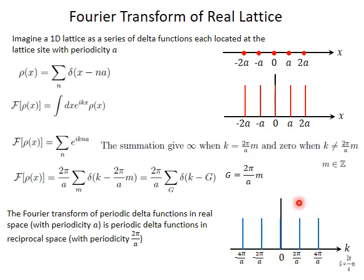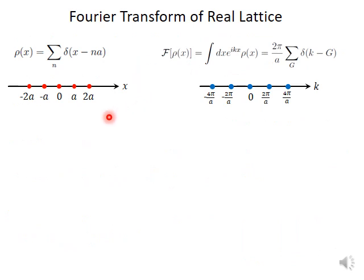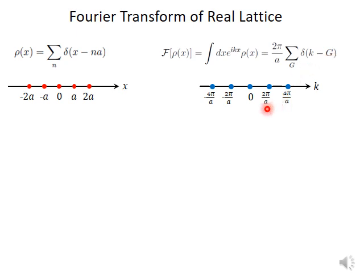This reciprocal space is basically associated with the real space. To summarize: you have a real space lattice, you take a Fourier transform, and you get a lattice-like structure in the Fourier space, with a delta function exactly at the specific K values whenever K equals G, where G is integer multiples of 2π/a.